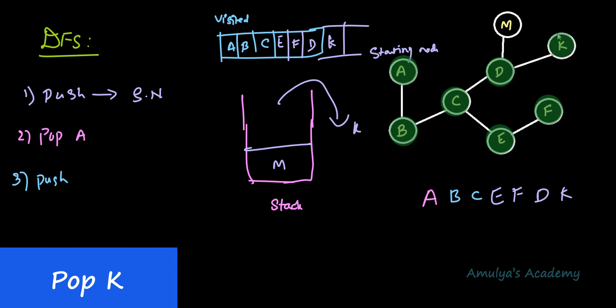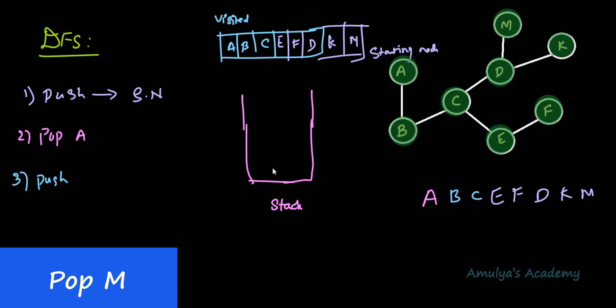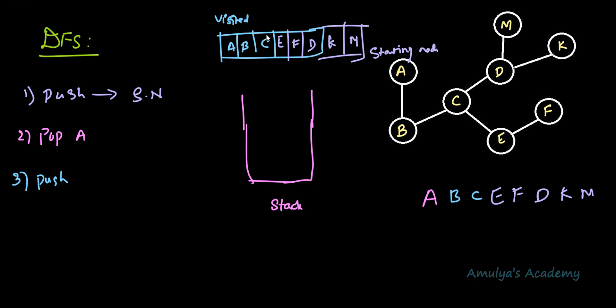Next we need to push the unvisited adjacent nodes of K, but there are none. So we perform pop — M is on top, so we pop M. M is not visited, so we visit it. We then try to push all unvisited adjacent nodes of M, but there are none. We perform pop, but the stack is empty — that means we are done. This is how the stack is used to implement the DFS algorithm.